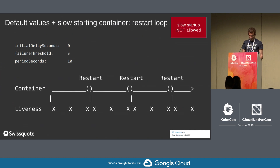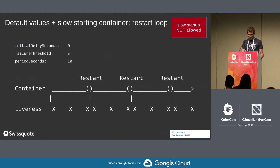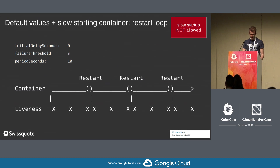Now let's take a slow starting container. It has an application that has a long initialization at first start, and then the restarts are much faster. You can see it fails three times and then the container is restarted in a loop, because we are not giving enough time for the application to finish the initialization. So how should we tune the liveness probe?